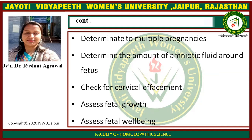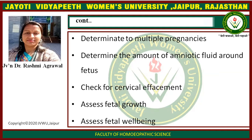Sixth, USG helps determine multiple pregnancies — whether there are twins, triplets, or quadruplets. Seventh, it helps determine the amount of amniotic fluid around the fetus, which is helpful for deciding between cesarean or vaginal delivery and assessing fetal comfort.